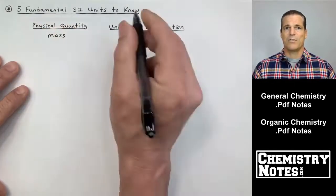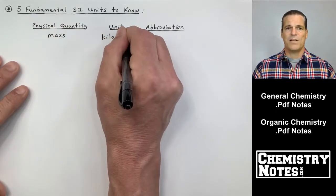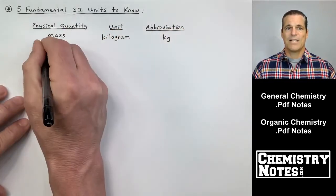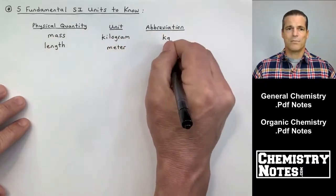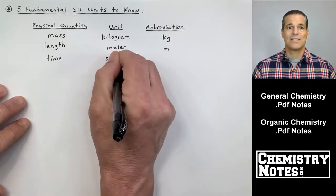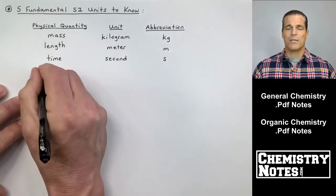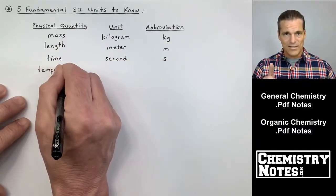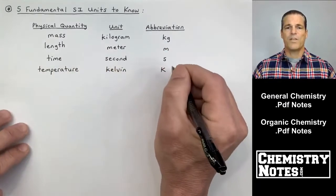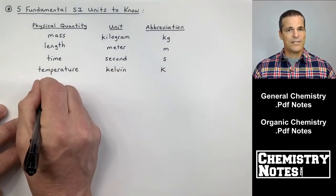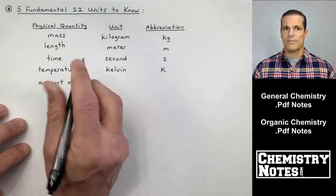Mass, the unit is kilogram, abbreviated kg. Length, the SI base unit is meter or fundamental unit, abbreviation M. Time, second, abbreviation S, not SEC, S. Temperature Kelvin, abbreviation K, not degrees K, just plain old K.